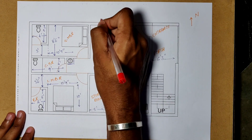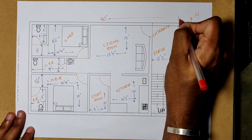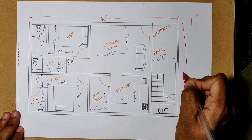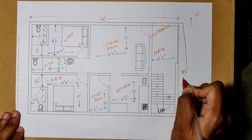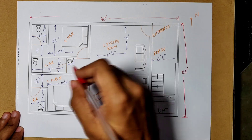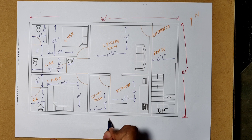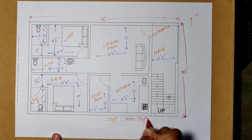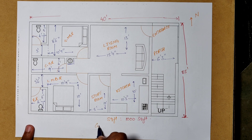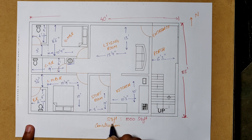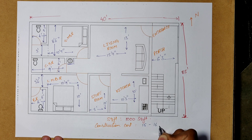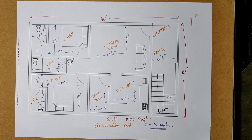The total width of this house plan is 40 feet and the total length is 25 feet. The total area is 1000 square feet. The construction cost is approximately 15 to 16 lakhs.